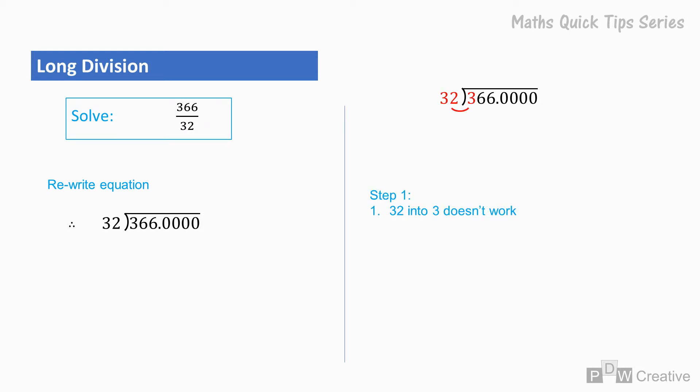32 into 3 doesn't go, so we move along the line. 32 into 36 goes at least once, so we can write 1 above the 6. 32 times 1 equals 32, so 32 is written below 36.